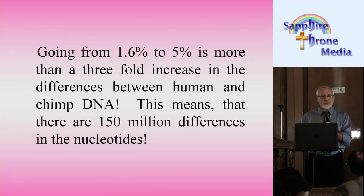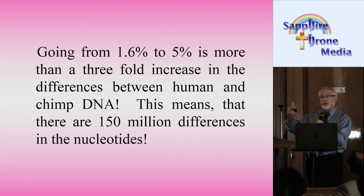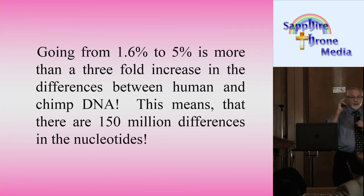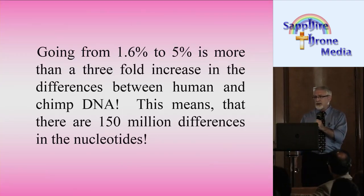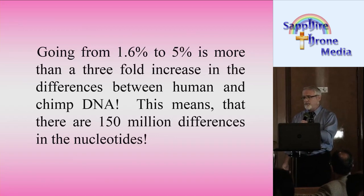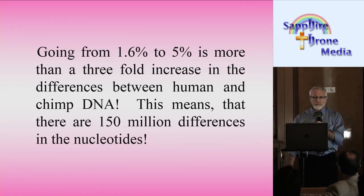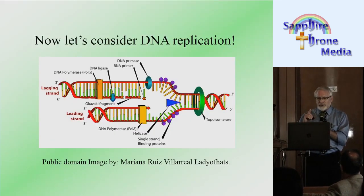This means there are at least — if you multiply 48 million by three, and it's actually more than three — there are more than 150 million differences in nucleotides at a 95% similarity rate. Over 150 million differences in the nucleotides. Now let's consider DNA replication.